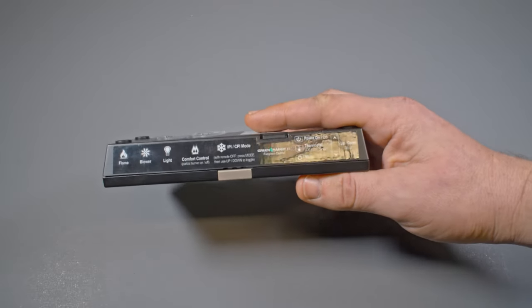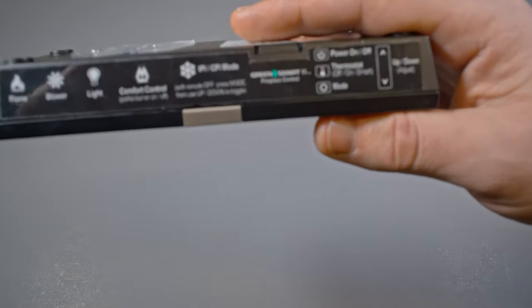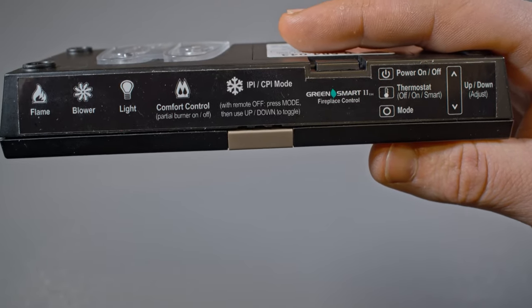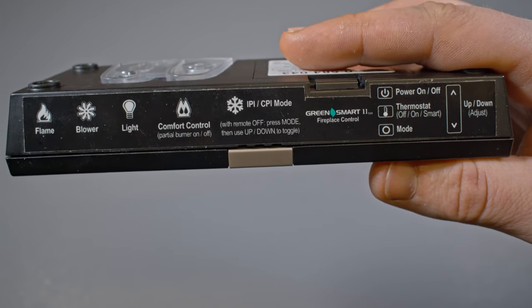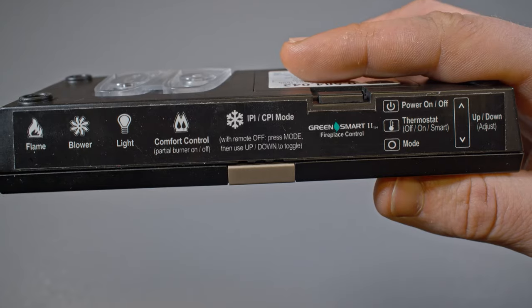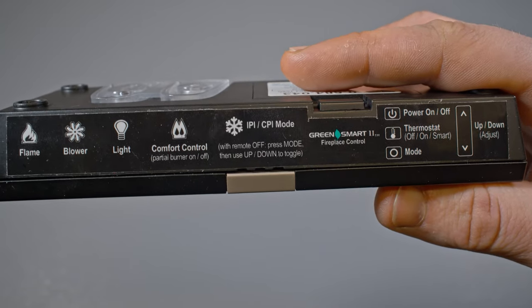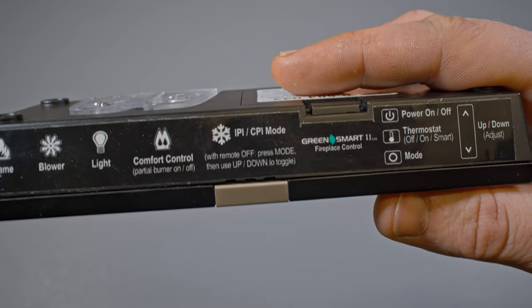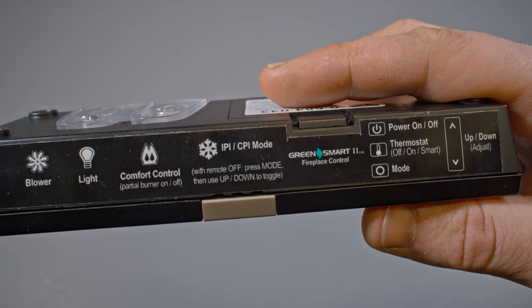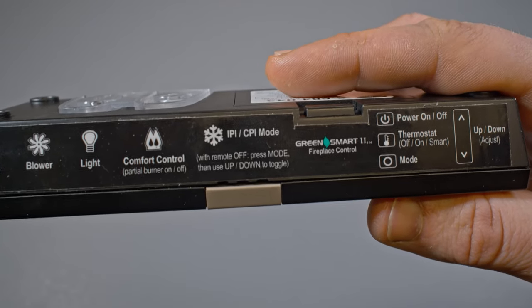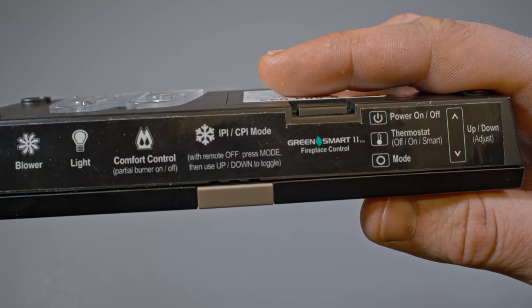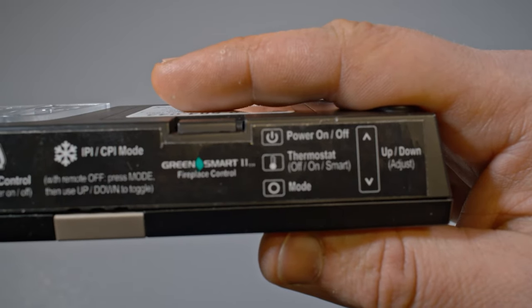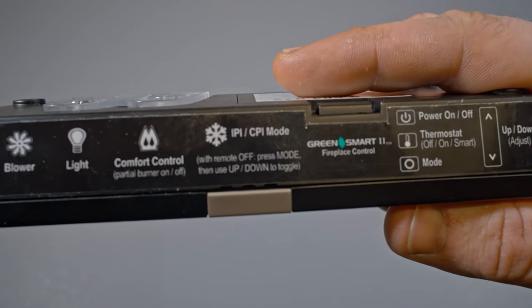One of the things that I really like about this remote is that they give you a really nice infographic right on the top side of it, bringing it up so you can see it a little bit better here. But obviously it gives you a nice little outline of what all those silhouettes that light up on the remote screen, what they mean and what they are. So from left to right, you get the flame, the blower, the light comfort control, which is the secondary burner there. And then we have an IPI and CPI mode. And then it goes into what each of those buttons do on the right side there. So when in doubt, sometimes you just flip this thing up so that you can see it there. And that gives you a pretty good idea of what you need to know, at least in basic, so that you can operate your remote fairly easily.